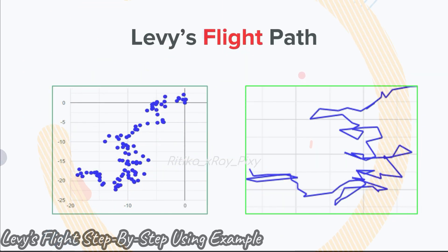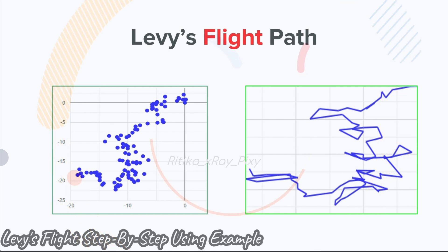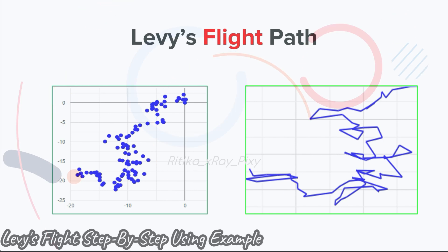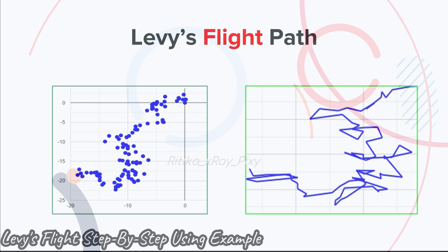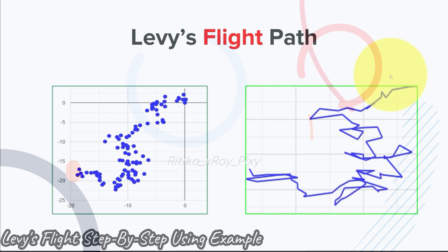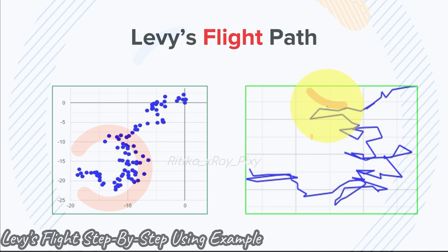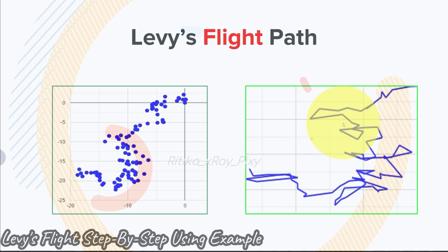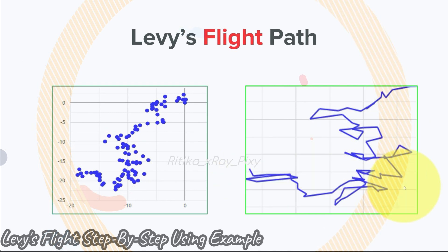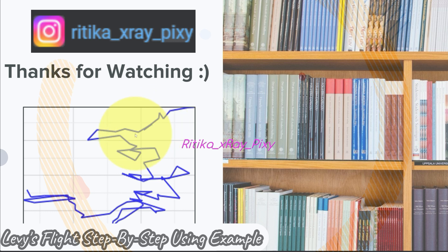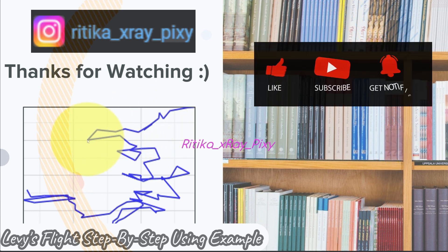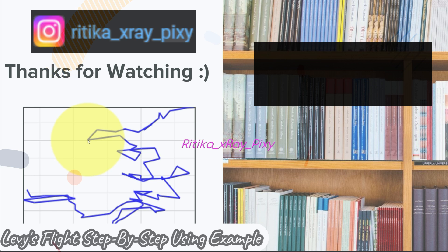We can use Lévy's flight in algorithms for efficient exploration, to prevent algorithms getting stuck in local optima, and for finding better solutions. The long jumps and short movements help the algorithm jump out of local optima while also covering a wider search space, helping the algorithm find the optimal solution. That's all for this video — if you have any questions you can comment below, and thanks for watching.